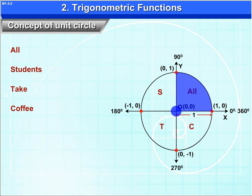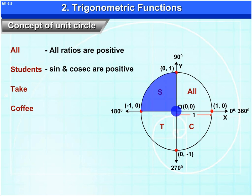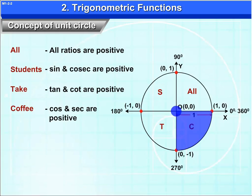Now, all means in the first quadrant, all the ratios are positive. In second quadrant, S is for sine, so sine and cosec are positive. In third quadrant, T means tan, so tan and cot are positive. And in fourth quadrant, C means cos, so cos and sec are positive.